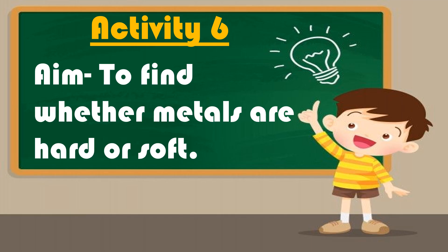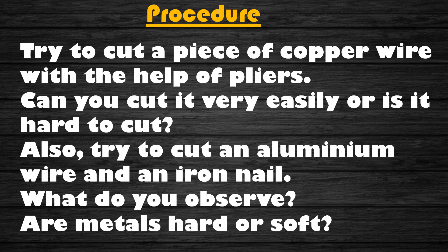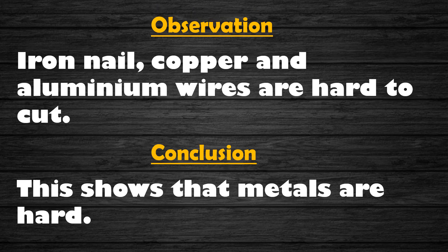Let us perform an activity to find whether metals are hard or soft. You will require a copper wire, an aluminum wire, an iron nail, and a plier. Now try to cut a piece of copper wire with the help of pliers. Can you cut it very easily or is it hard to cut? Also try to cut an aluminum wire and an iron nail. You will observe that the iron nail, copper, and aluminum wires are hard to cut. So we can conclude that metals are hard.